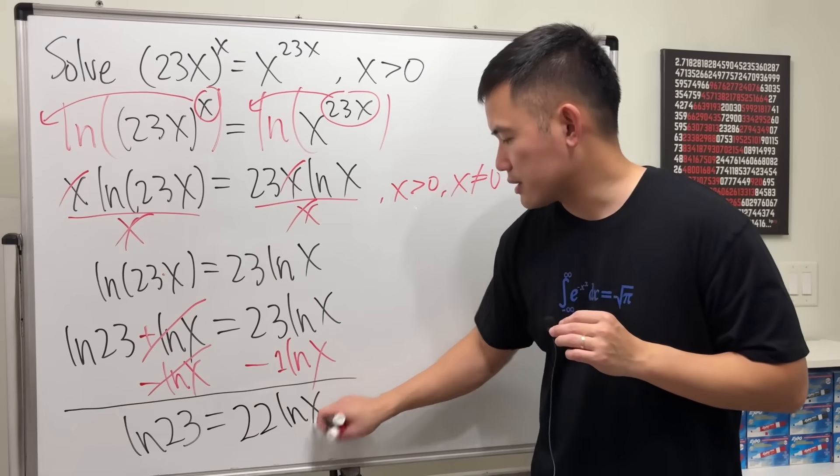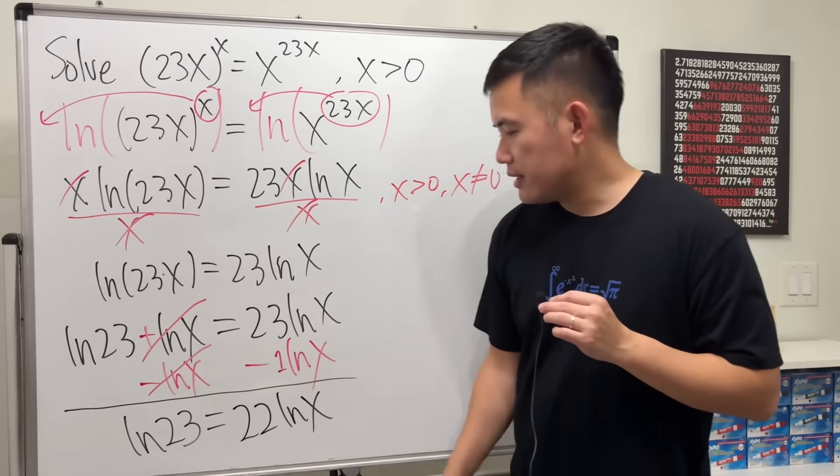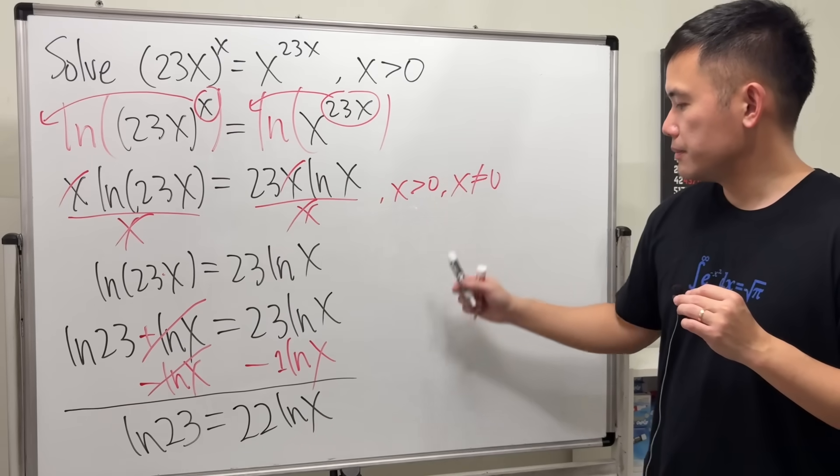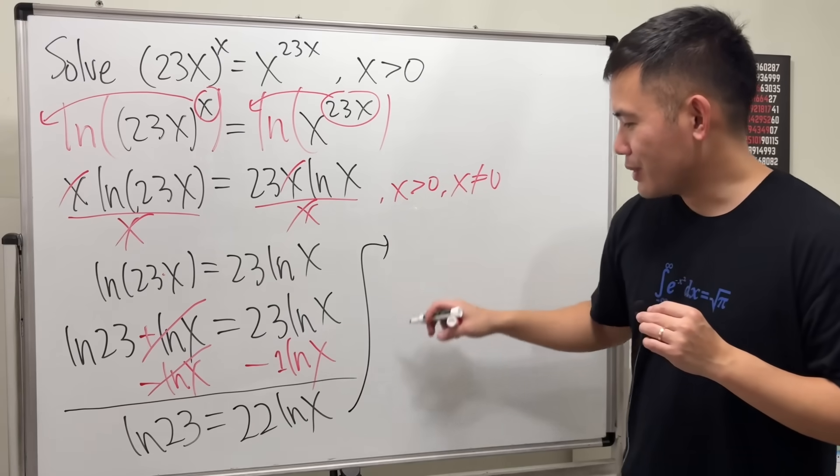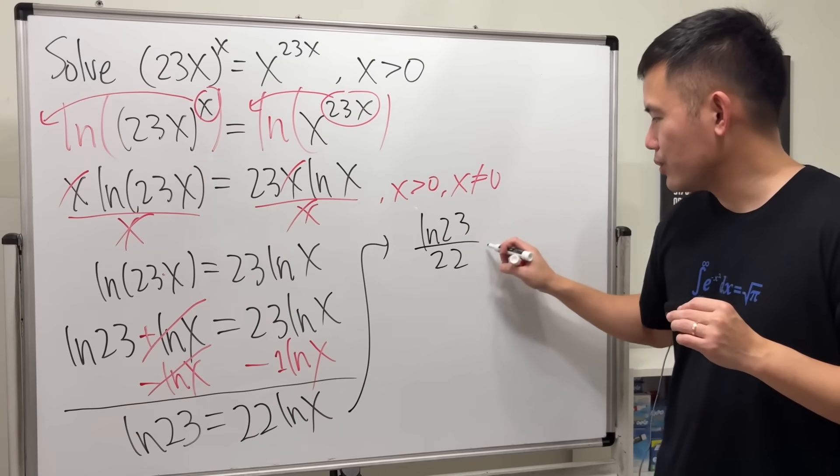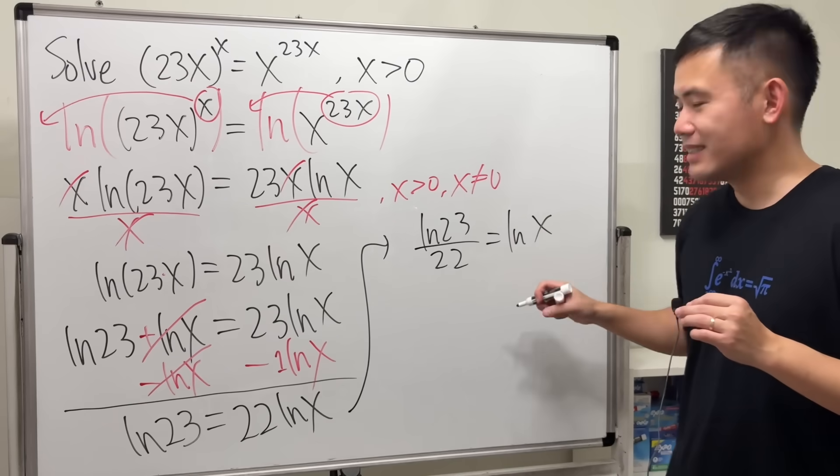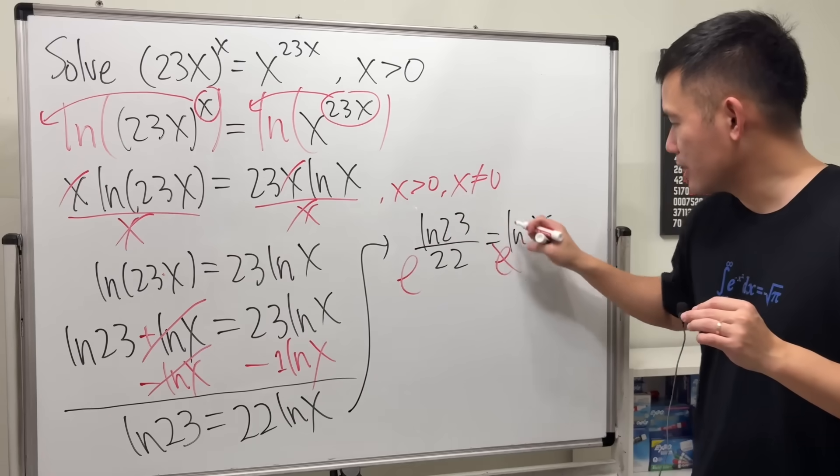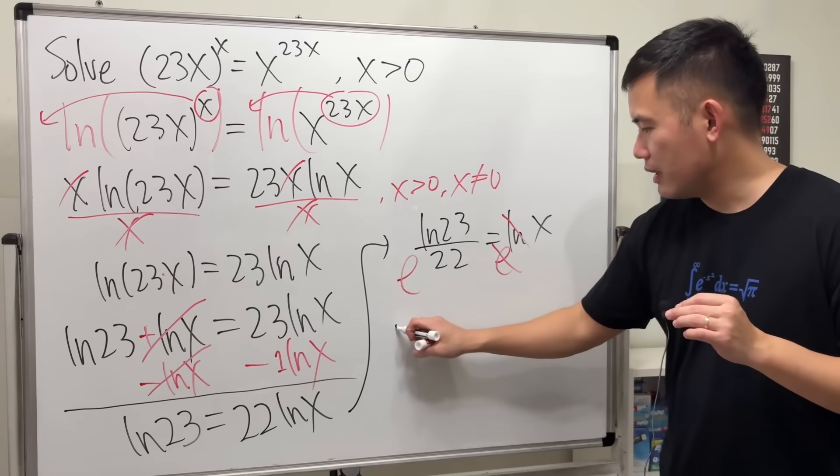We'll just put it here, so we have ln(23)/22 = ln(x). Then finally, we can just do e to this power and e to that power cancel, and we have x = e^(ln(23)/22), which looks a little bit too complicated. I don't like that, so...